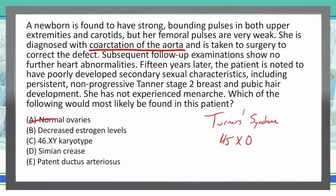Choice B: Decreased estrogen levels. Decreased estrogen levels would explain the lack of progression through puberty, the limited pubic hair development, and the absence of menarche. So I'm going to leave that one in as a strong candidate.